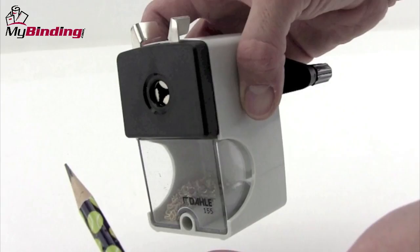Model 155 goes in the hand or stands alone on the desk, but also comes with a small clamp that you can put over the edge of a table. The waste band pulls out from the front here.